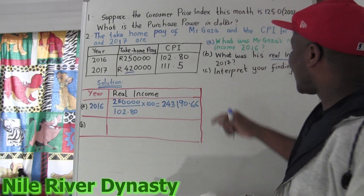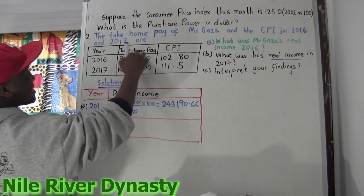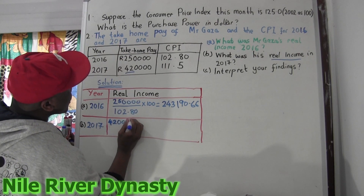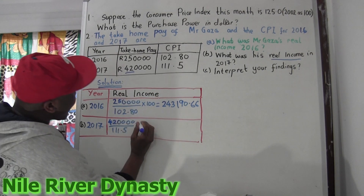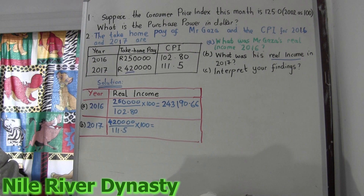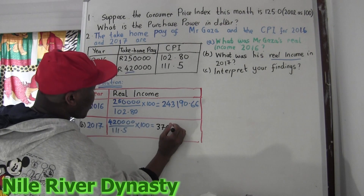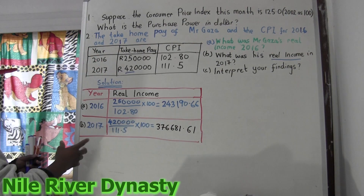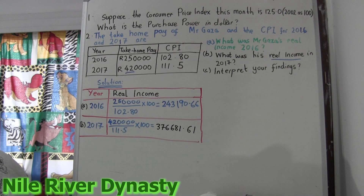We will do the same for 2017. We take his take-home income of 420,000 divided by the CPI of 1.15, then multiply by 100. This gives us 376,681.61. So that is his real income for 2017, and we already have 2016.